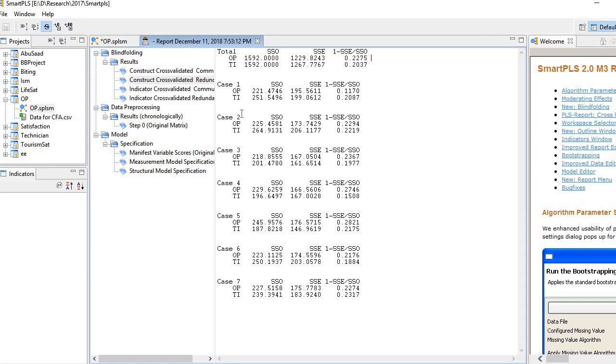Now here you see, so these are the cases. You see, in this case, every seventh point have been omitted. Here every sixth data point have been omitted. Here every fifth. Here every fourth. Here every fourth. Here every three. So you see here, predictive relevance is established in all cases. At least medium size is there. In none of the cases, it is less than 0. So that means predictive relevance is established in our model.